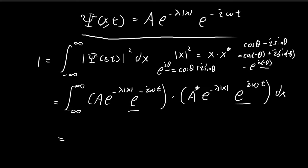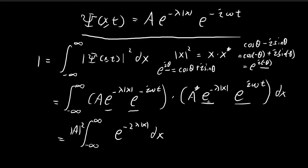Now we combine both terms. The A terms give us |A|², the absolute value squared of the constant A. The two exponential e terms multiply together to give e^(−λ|x|). The remaining terms cancel out because one is just the reciprocal of the other, so they multiply to give 1. Now we just focus on this expression.